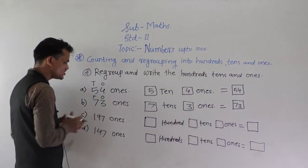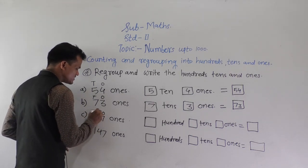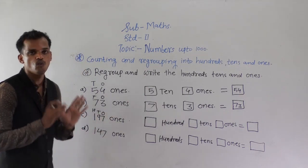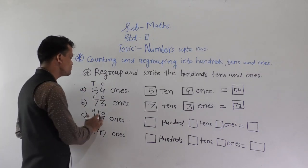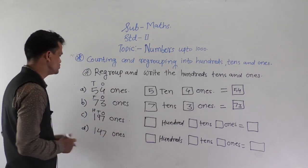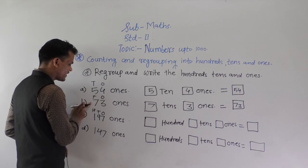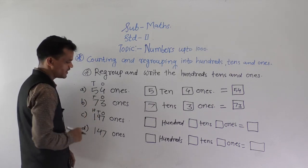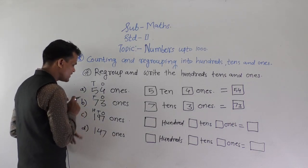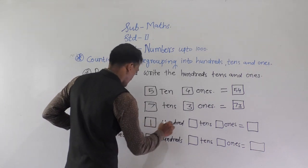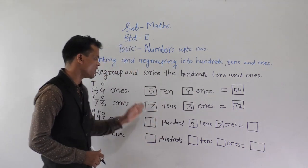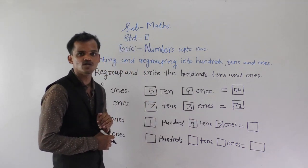The next is a 3-digit number, so it should have 3 places: 1s, 10s, and 100s. Here we have 197 ones, and we have to regroup those 197 ones into 100s, 10s, and 1s. This number has 19 tens and 7 ones. The number formed is 197.